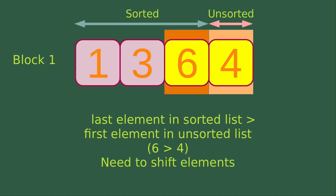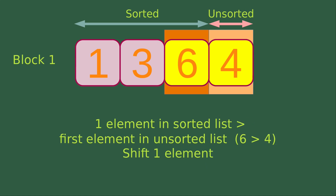Then we do the next round of insertion sort. We see that the last element in the sorted list is larger than the first element in the unsorted list — for example, 6 is larger than 4 — so we need to do the shifting of elements. We find that there is one element in the sorted list that is larger than the first element in the unsorted list, so we just need to shift one element.